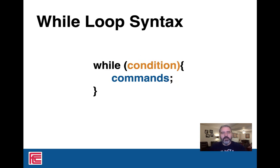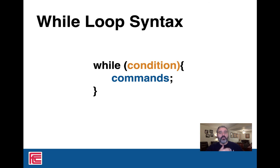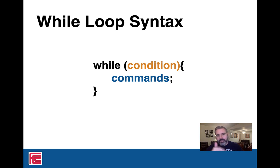Here's the syntax for the while loop. It has a condition — those are the same conditional expressions we used in if statements, the exact same conditionals. While that condition evaluates to true or false: if it's true, we do the commands inside the block (curly braces). If it's not, we skip the block and continue on with our program. While loops are really good when I don't know the number of times to do something. If I know I have to do something a certain number of times, there's a better loop for that.